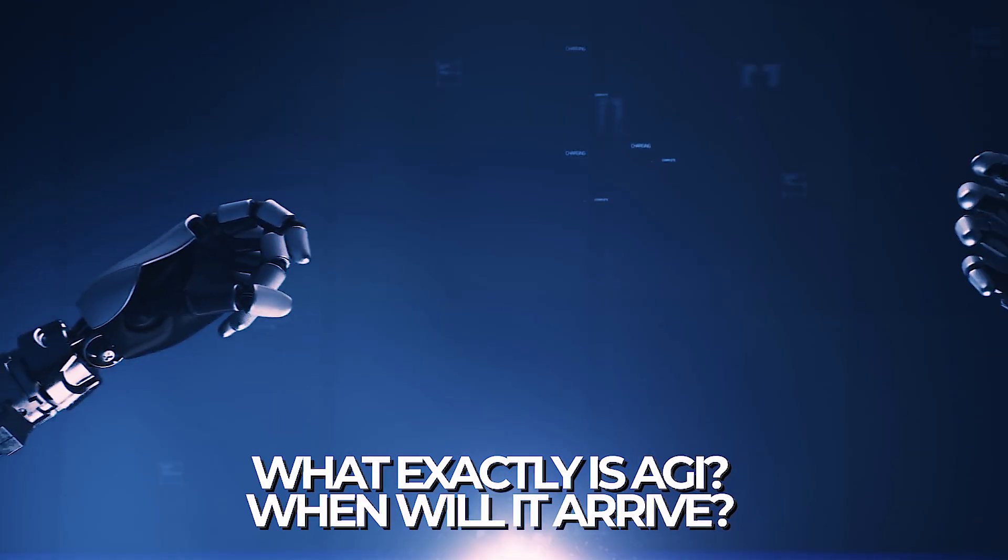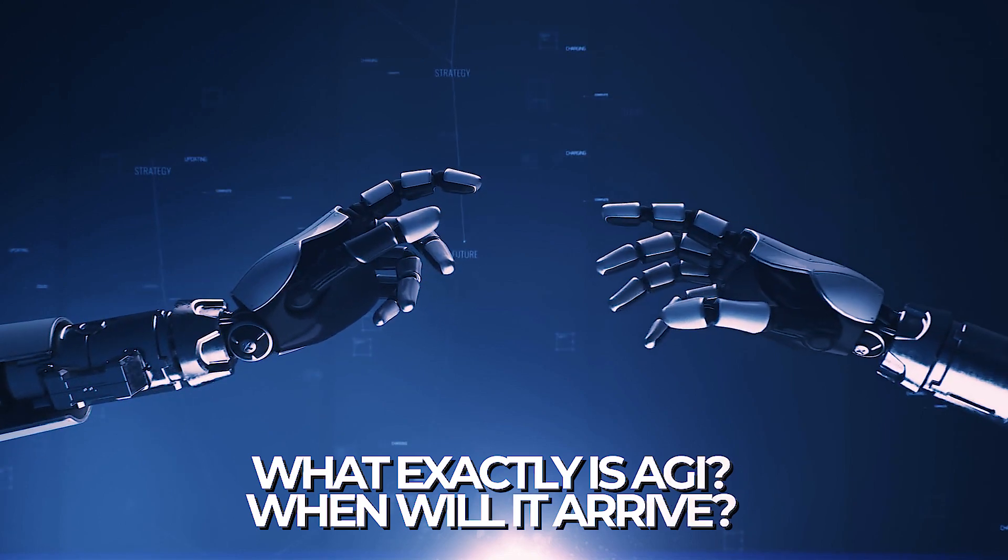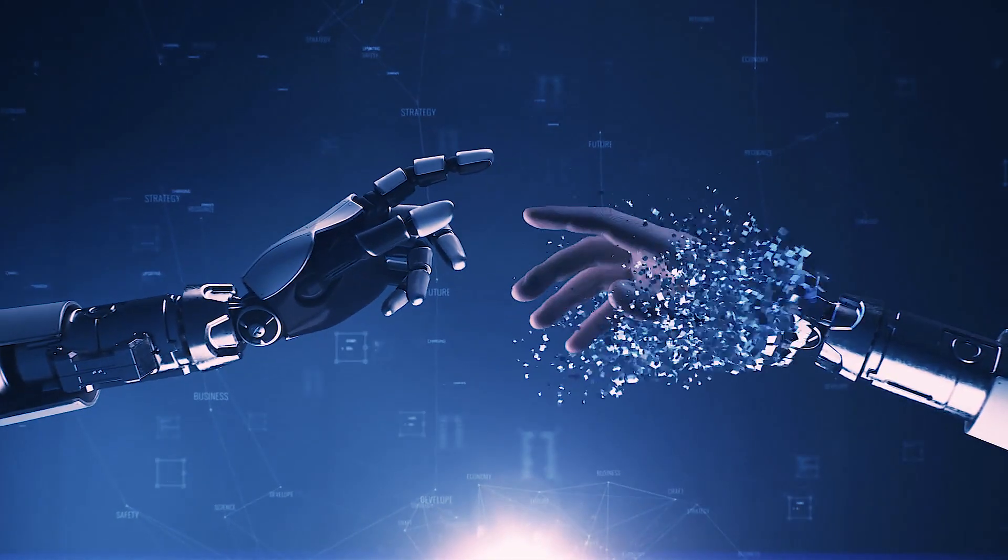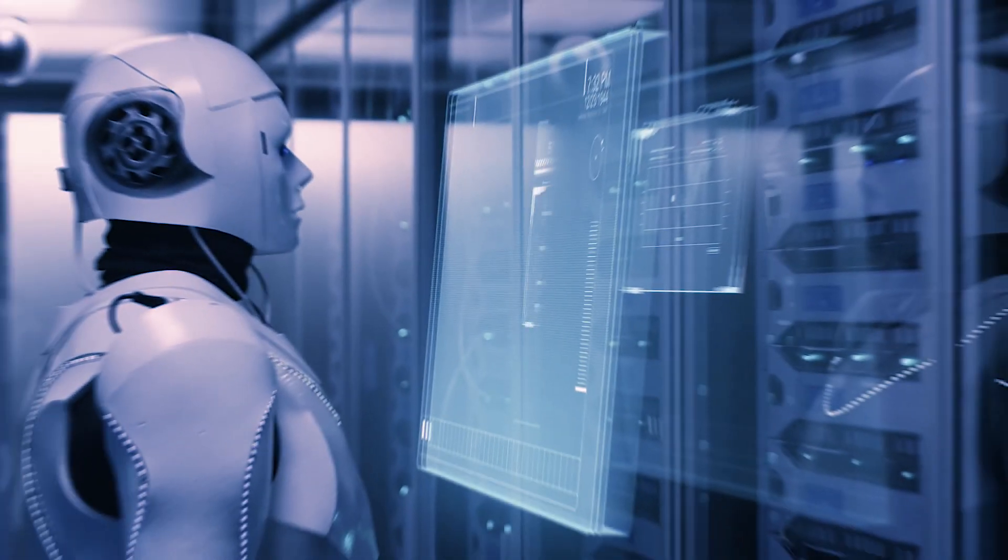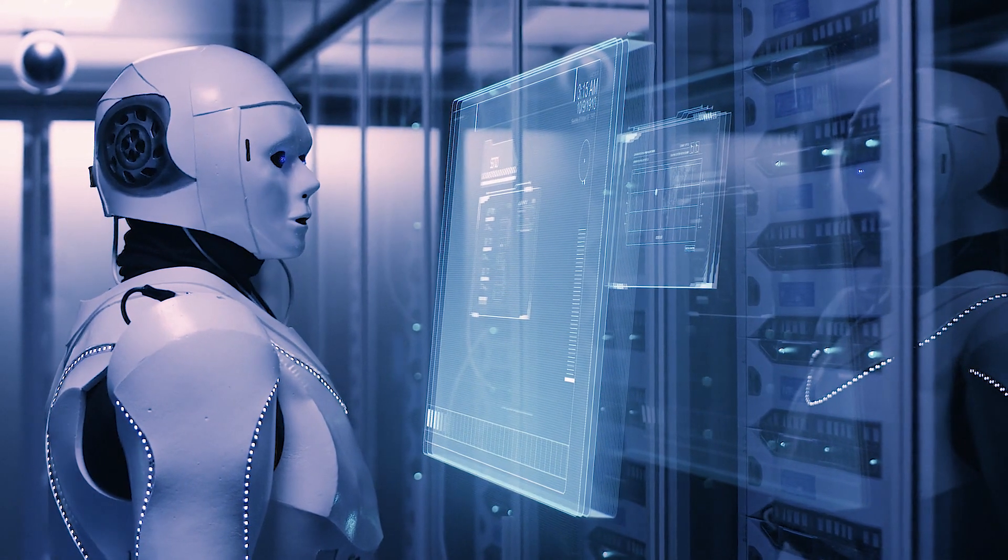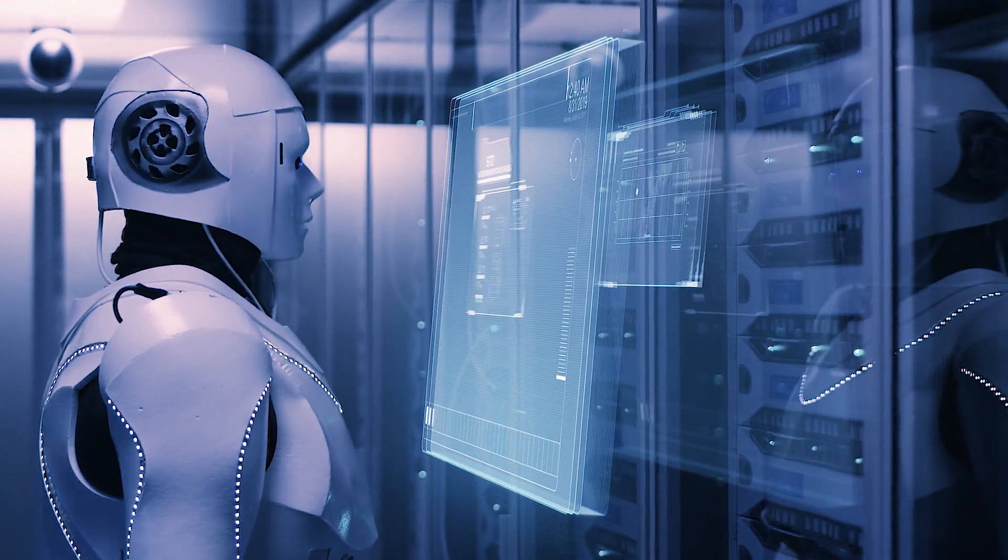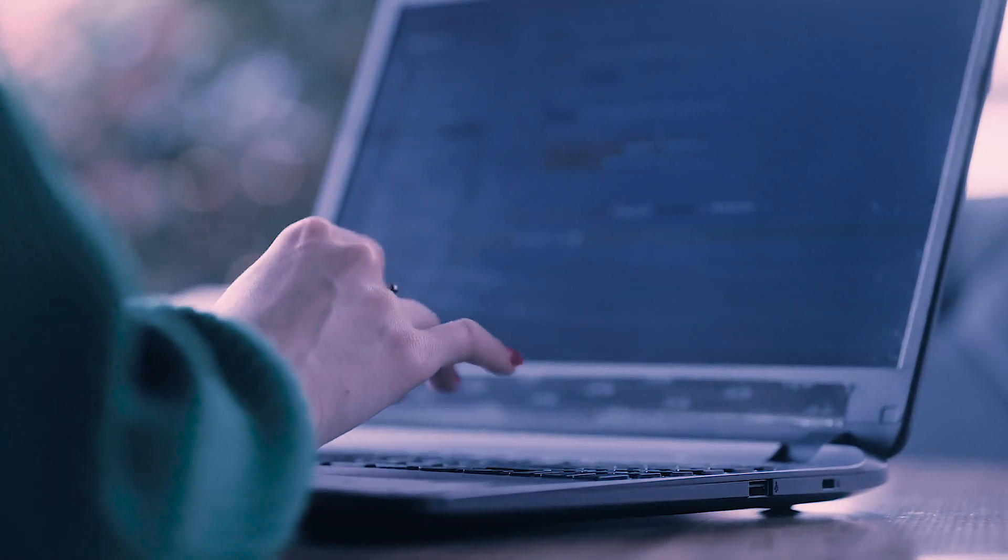So what exactly is AGI, and when will it arrive? Stay tuned till the end to find out. AGI, or Artificial General Intelligence, refers to machines that possess the capacity to perform any intellectual task just as proficiently as a human being can.